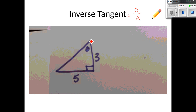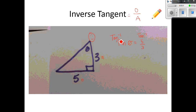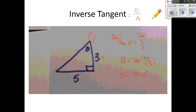Now inverse tangent. Tangent is still opposite over adjacent — TOA — remember. Standing at angle theta, the 3 is our adjacent and 5 is our opposite, so tangent of theta equals 5 over 3. To isolate theta, apply inverse tangent on both sides: theta equals tangent inverse of 5 over 3. Type that ratio in parentheses into the calculator and it gives 59.04 degrees.